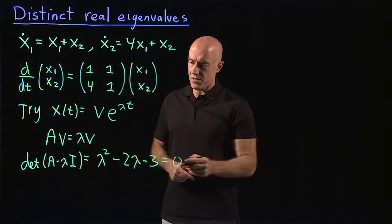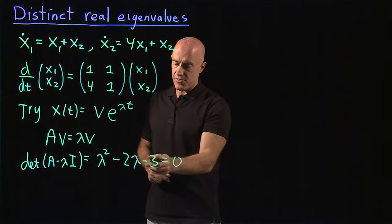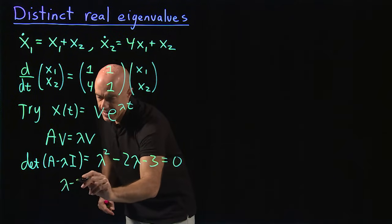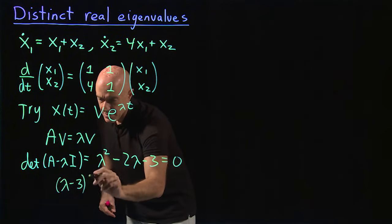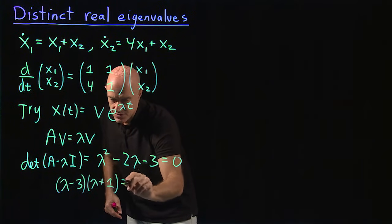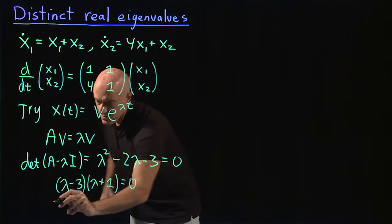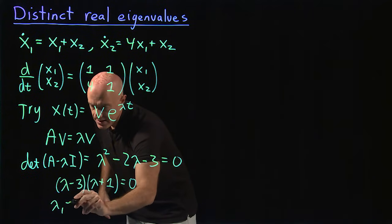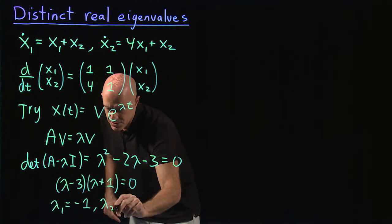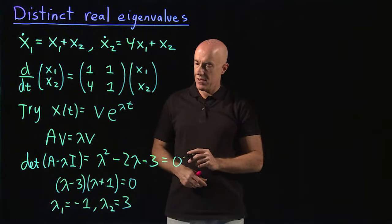Is that factorable? This is lambda minus 3 lambda plus 1. So we have lambda minus 3 lambda plus 1 equals 0. So we have two eigenvalues: lambda 1 equals minus 1 and lambda 2 equals 3.